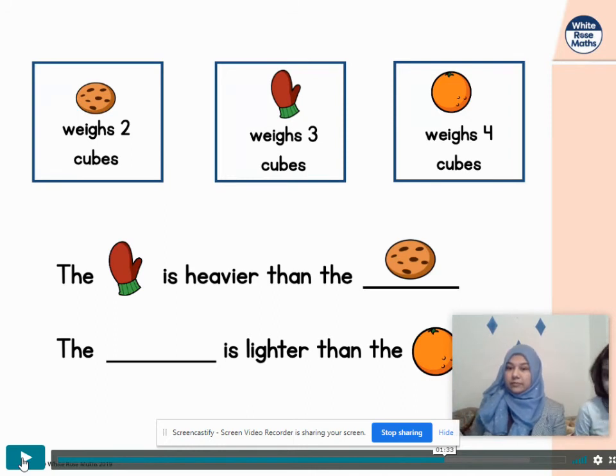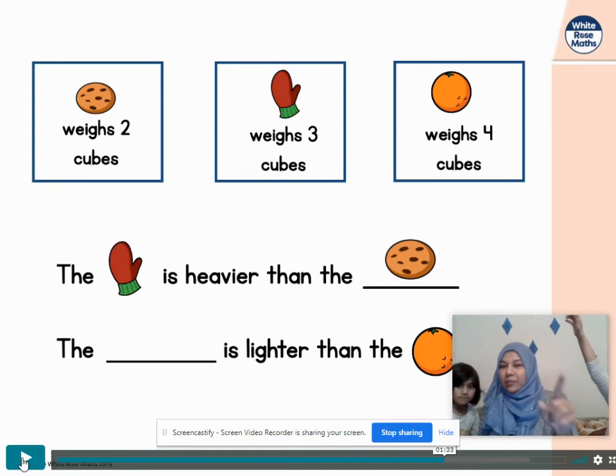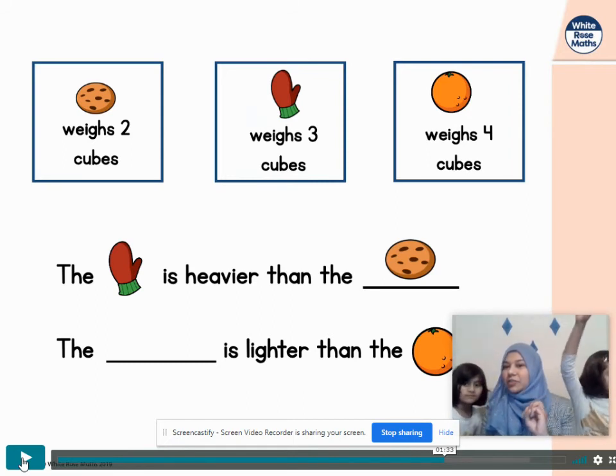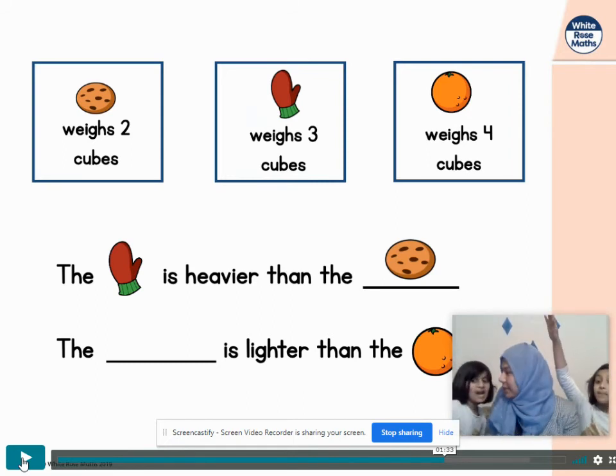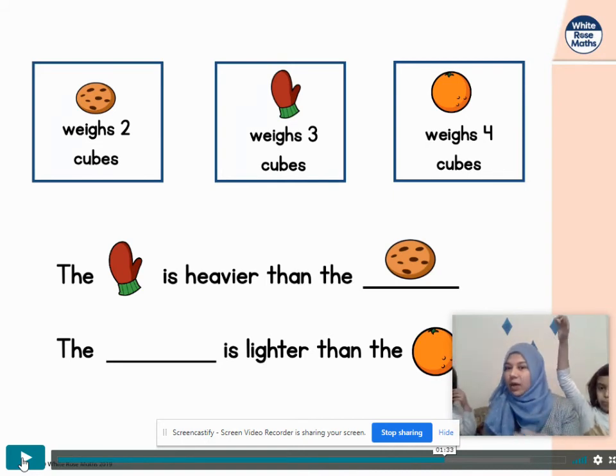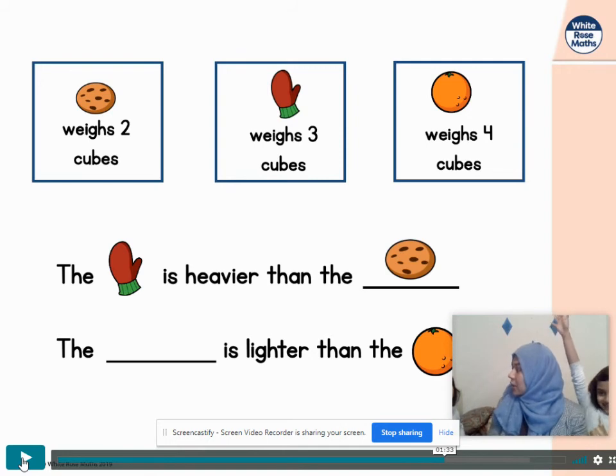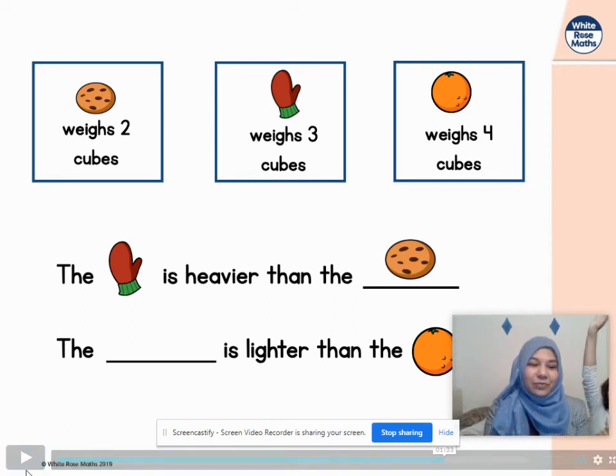I was going to think the mitten, because mittens are so soft. They're so light! Think about the numbers, Zainab. So the mitten weighs three cubes, but the orange weighs four cubes. Which number is bigger? Orange. Well done. So why is the orange heavier than the mitten? Is it because mittens are softer or is it because three is less than four? Because three is less than four. Good girl. High five. Well done. Let's move on.